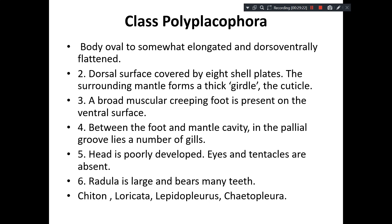After having studied Cephalopoda with two examples, let us move on to the next class — Polyplacophora. Polyplacophora: poly means many, placa means plate, pora means bearer — the animal which has more than one shield on its body. The body is oval in shape, somewhat elongated and flat, dorso-ventrally.